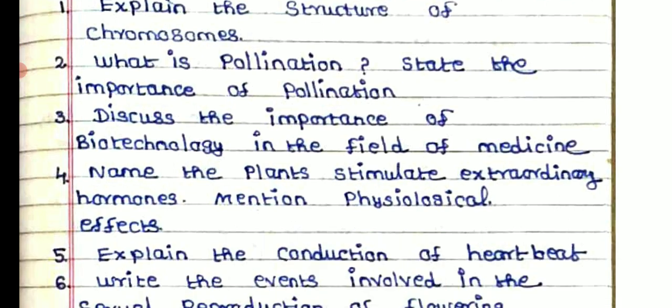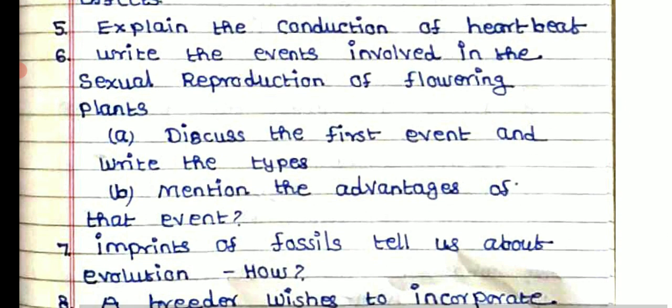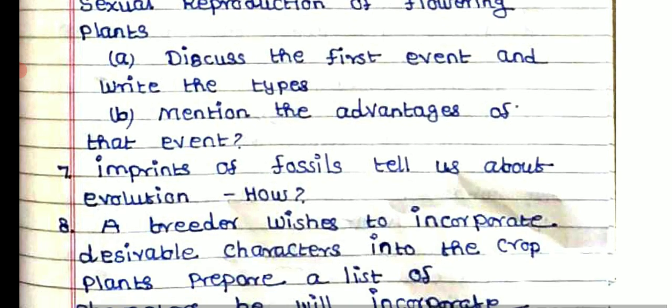Explain the structure of a chromosome. What is pollination? State the importance of pollination. Discuss the importance of biotechnology in the field of medicine. Name the plants that stimulate extraordinary hormones and mention their physiological effects. Explain the conditions of heartbeat. Write the events of involuntary sexual reproduction in flowering plants.